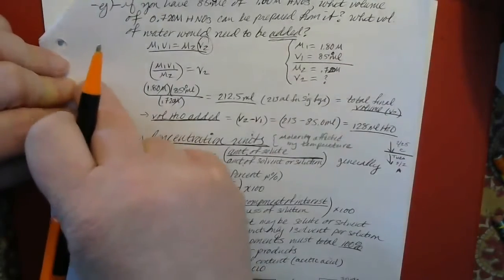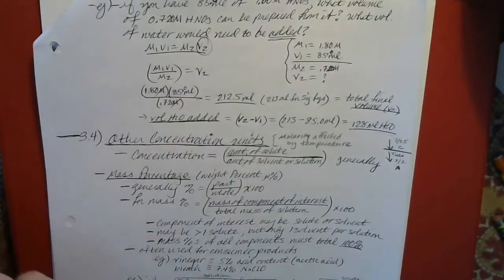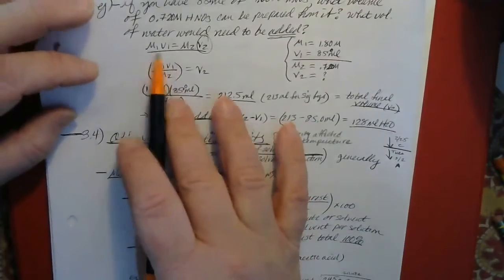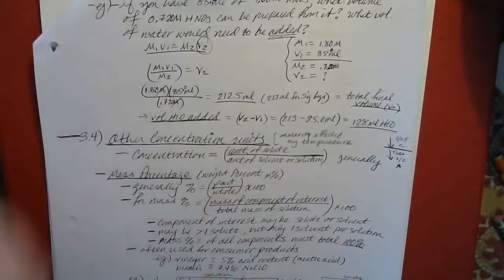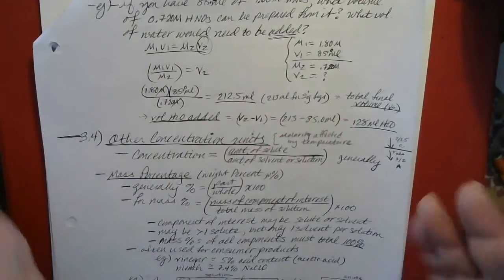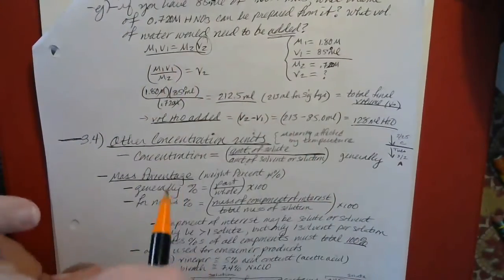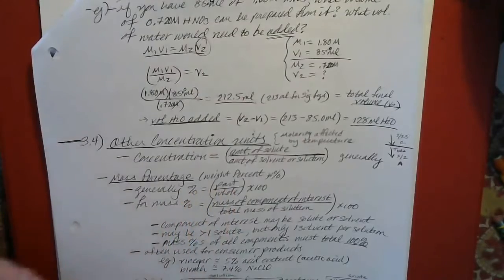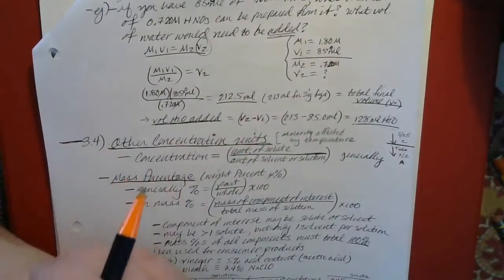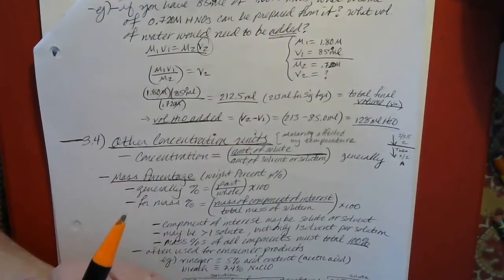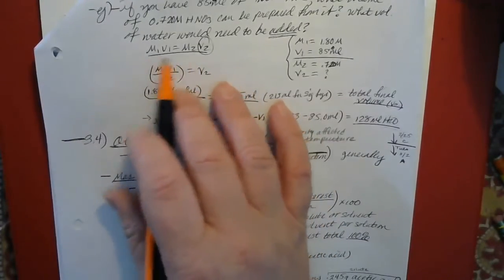Molarity is moles of solute divided by the volume of the solution in liters, and that's a very handy way to do things. We also went over dilutions, where you take a certain solution with a certain volume, dilute it up to a new volume, and find the new concentration. Dilutions are very important because they're things we actually do quite a lot in general chemistry — I have to dilute solutions all the time to make the solutions used in lab.